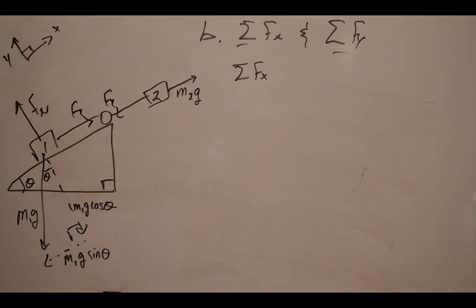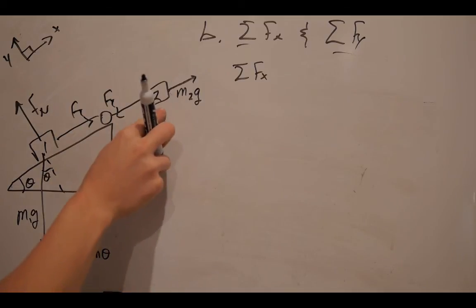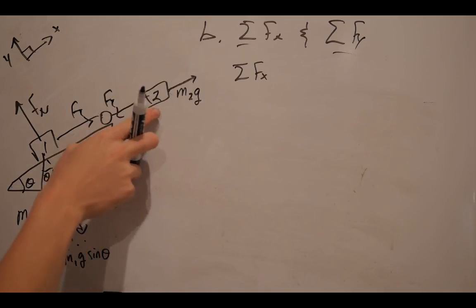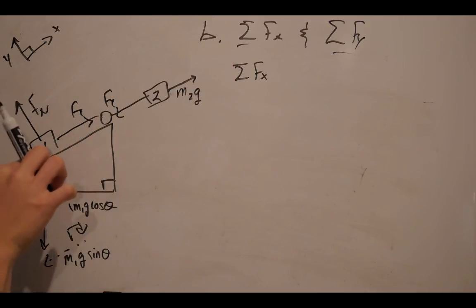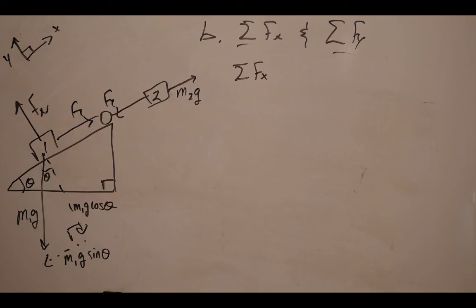But to make our math and our physics a lot easier, we adjusted mass 2 so that it's floating there, so that when it's being pulled down by gravity, it's going to be moving in the same direction that mass 1 is sliding.